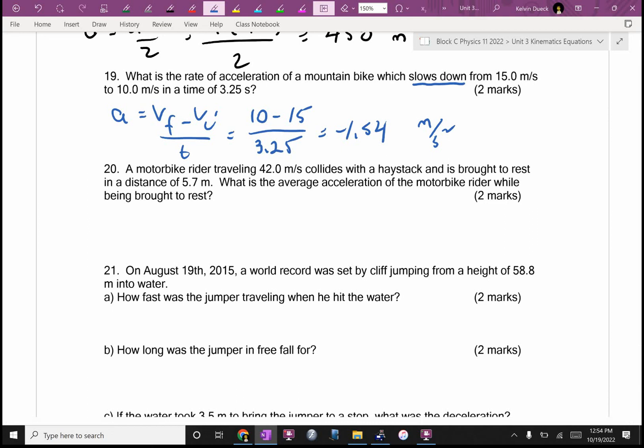Unlike number 20. So number 20, I pulled these numbers from, I think I saw a motorcycle crash during a race. A motorbike rider traveling 42 meters per second. Can somebody multiply that by 3.6? How many kilometers per hour? 150, so fast. And he came to a stop in 5.7 meters. 5.7 meters is about from me to the back wall. So it's a panic, very fast stop. Probably not a fatal stop, but also not one where you would just go, oh, that was fun.